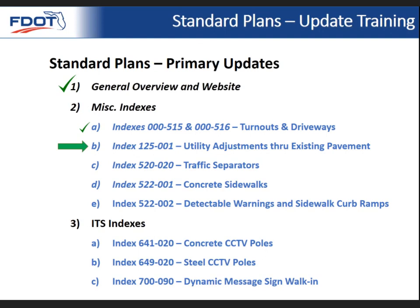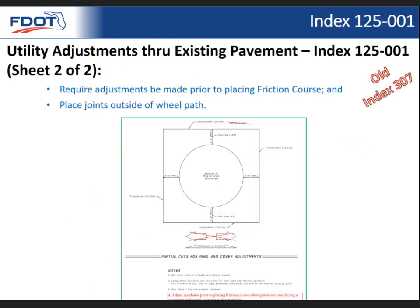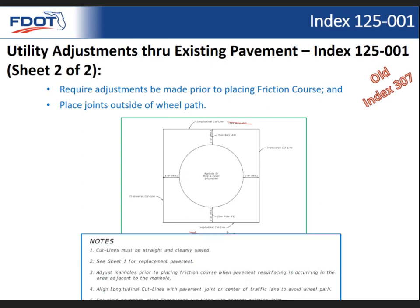For index 125-001, utility adjustments through existing pavement — this is old index 307 — on sheet two of two we made updates to notes relative to adjustment of manholes. We want to make sure any adjustments are made prior to placing any friction course and that any joints are located outside of the wheel path. We updated the notes at the bottom of that page to reflect that information, as it wasn't previously handled adequately in either the index or the specification.